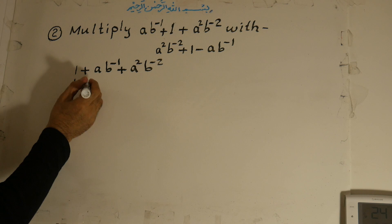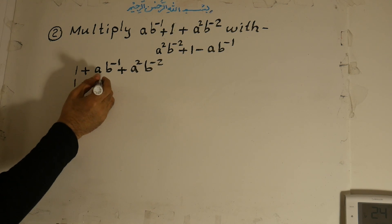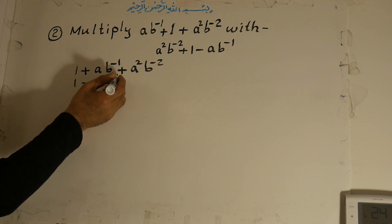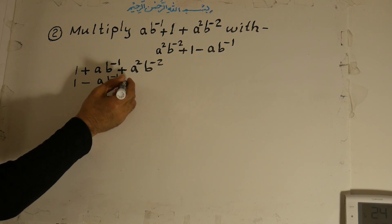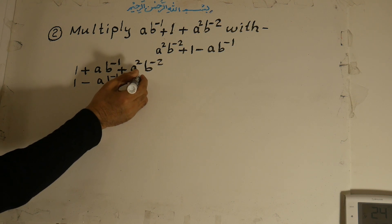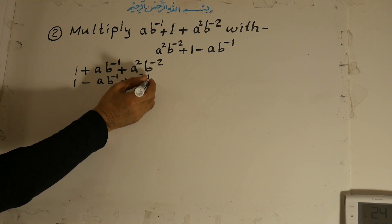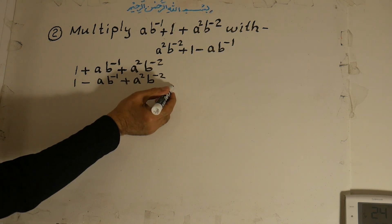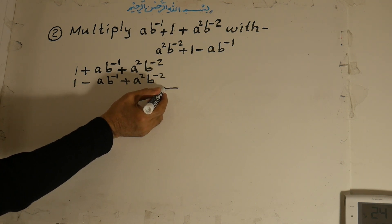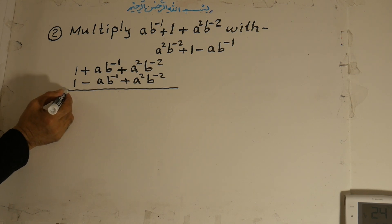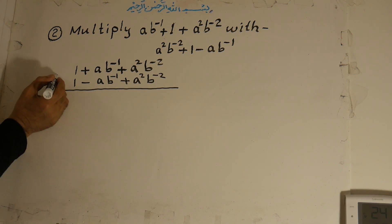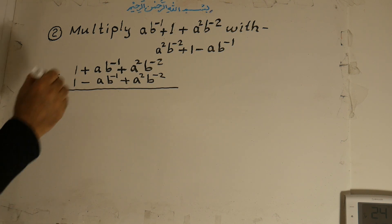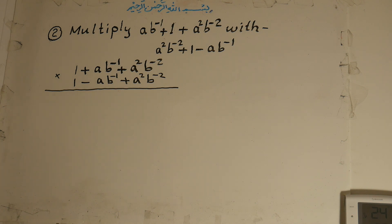...minus a b to the power of negative 1, plus a to the power of 2 b to the power of negative 2. We multiply these two trinomials.